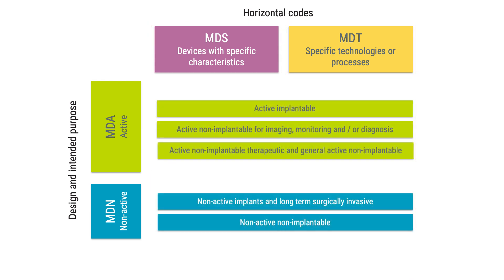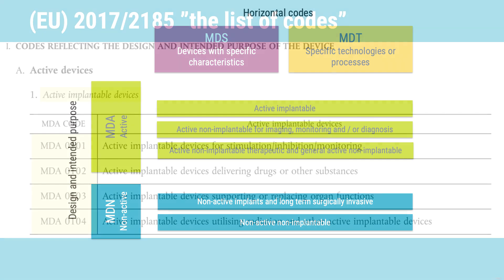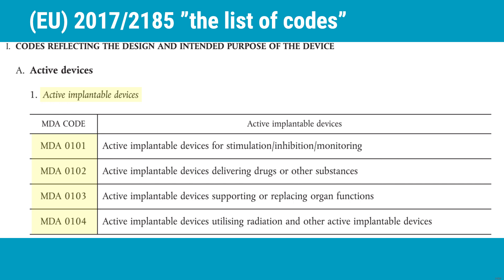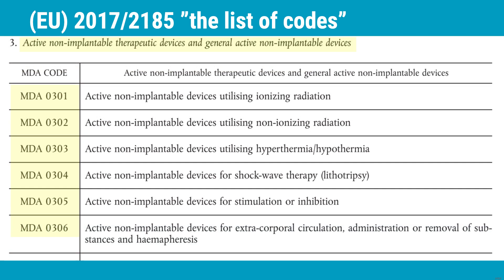Let's continue the explanation of those MDR codes. The MDA and MDN codes are further divided to form three active subgroups for MDA and two non-active subgroups for MDN. Looking into the regulation that contains the codes, it starts with the MDA codes. The first MDA group is active implantable devices, with its four categories. Then we have the group for active non-implantable devices for imaging, monitoring and/or diagnosis, with its four categories. The third group under MDA is active non-implantable therapeutic devices and general active non-implantable devices, which actually has 18 categories in it.